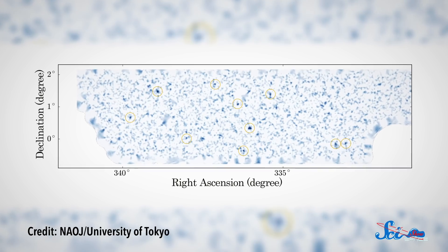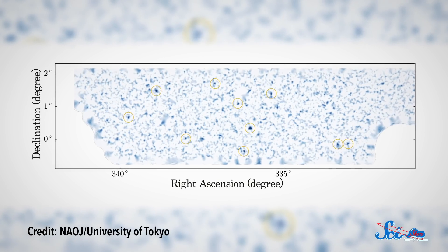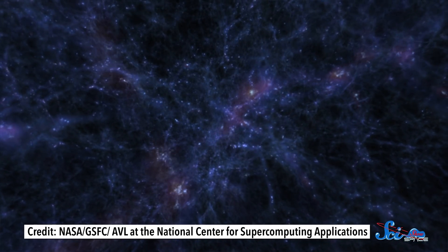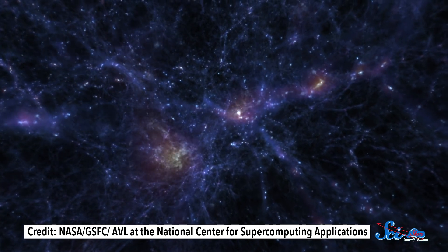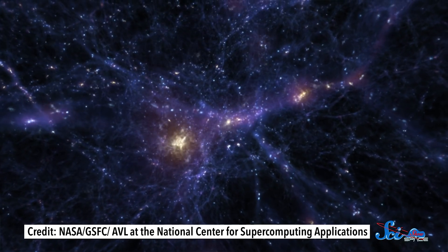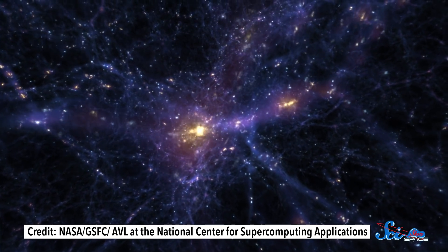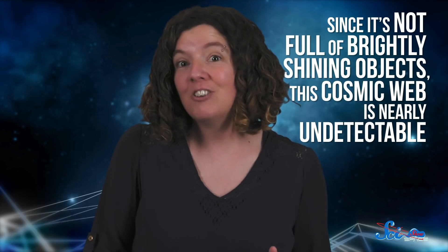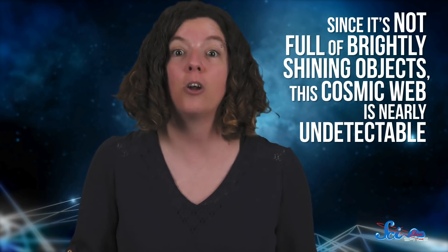In 2018, one group of researchers used it to make a map of dark matter in deep space that was wider and sharper than any map out there. And it clearly showed that dark matter is part of the scaffolding for the entire universe. Scientists have thought for a long time that matter in the universe is structured like a web, with enormous clusters of galaxies connected by long filaments that contain gas and dark matter. Unfortunately, since it's not full of brightly shining objects, this cosmic web is nearly undetectable. But cosmic shear has let us see dark matter filaments stretching between galaxy clusters in large regions of the sky.